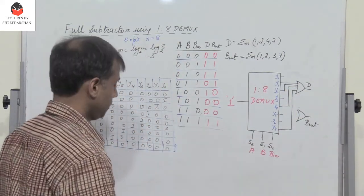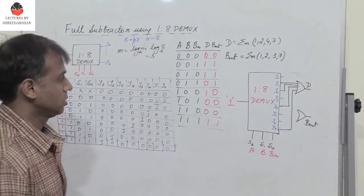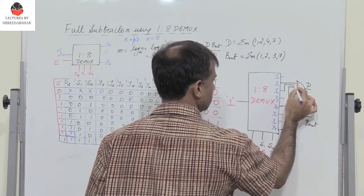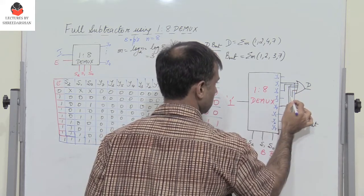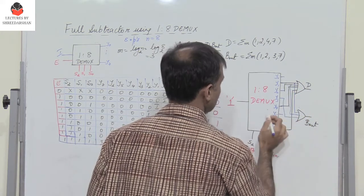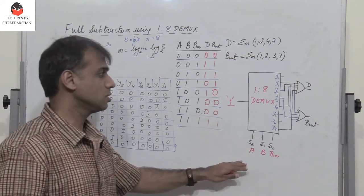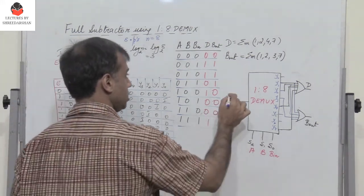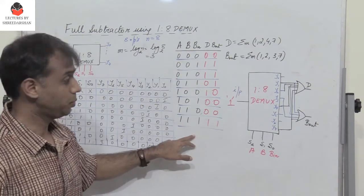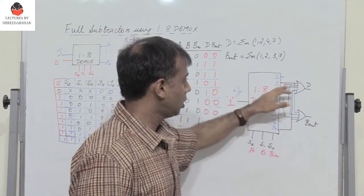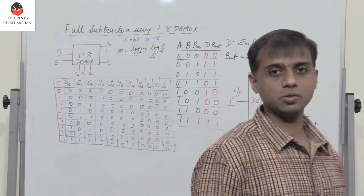Similarly for borrow out, it is 1 for combinations 1, 2, 3, and 7. So we connect Y1, Y2, Y3, and Y7 to another OR gate to get the borrow out. This circuit works as a full subtractor where the input is always tied to logic 1, the select lines are given A, B, and Bin, and connecting the respective outputs to OR gates gives the difference and borrow out. This is how we realize a full subtractor using a 1-to-8 DEMUX.